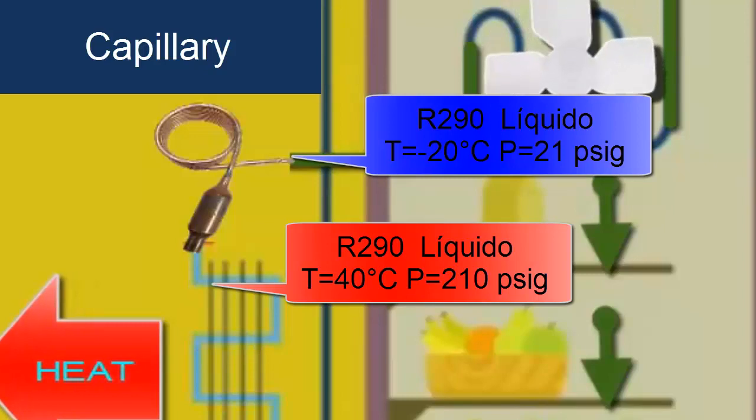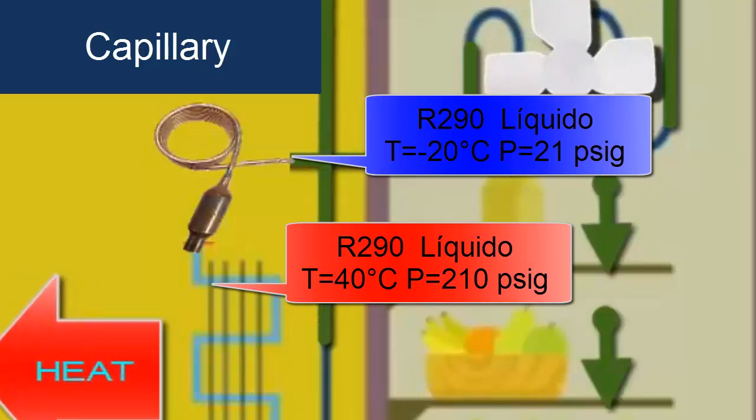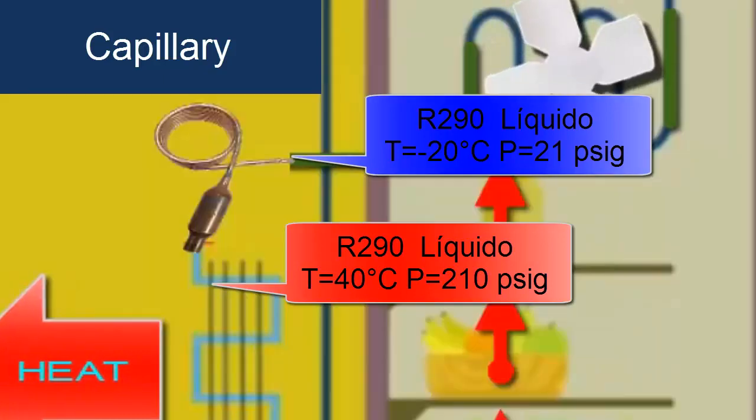In the capillary tube, the pressure and temperature of the refrigerant decrease significantly, returning to the initial pressure of 21 pounds per square inch and minus 20 degrees Celsius.